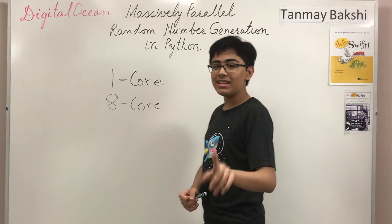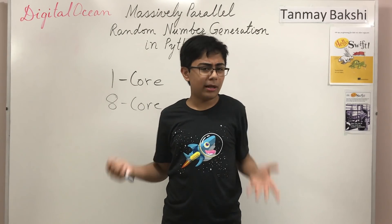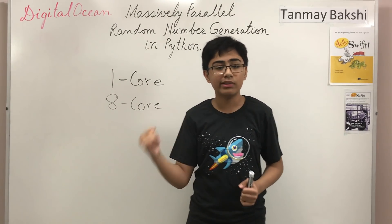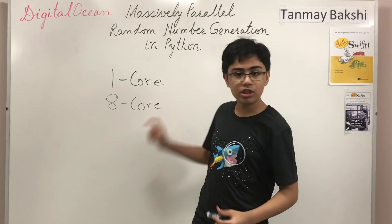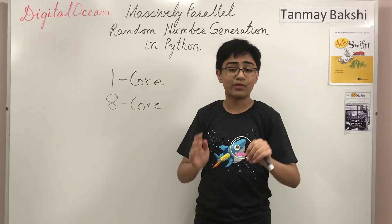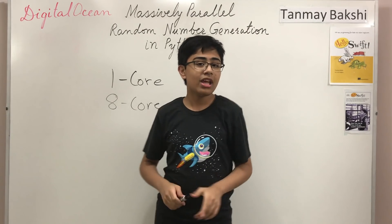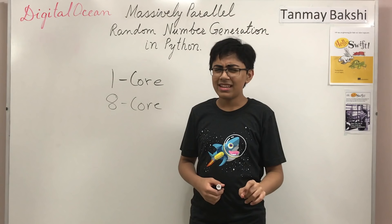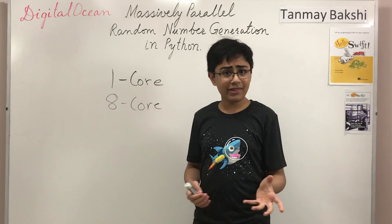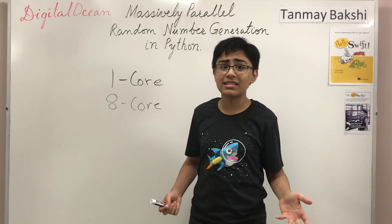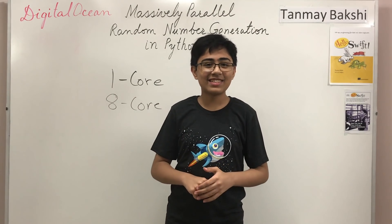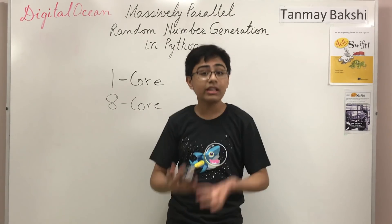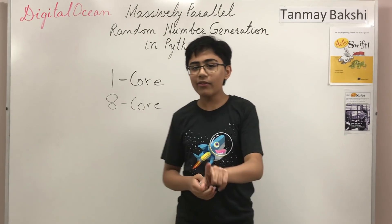Five million random numbers isn't really a lot since CPUs are very fast, so doing eight at a time is very quick for five million. However, when you scale up to 50 million the CPU starts struggling, and at 100 million it really starts heavily breathing — taking around 40-ish seconds for the eight-core to generate a hundred million random numbers.